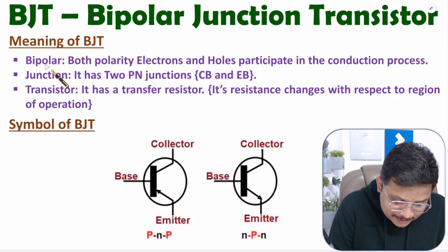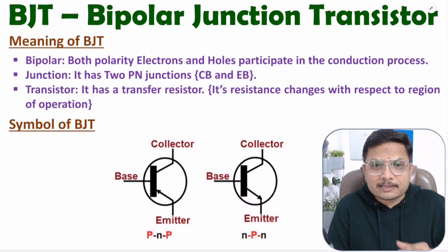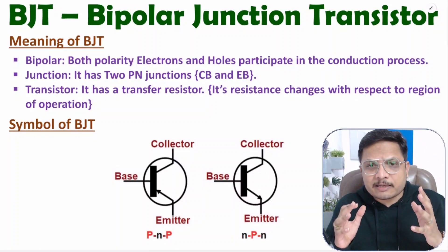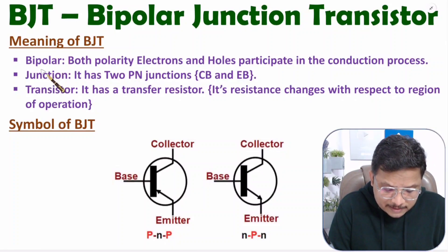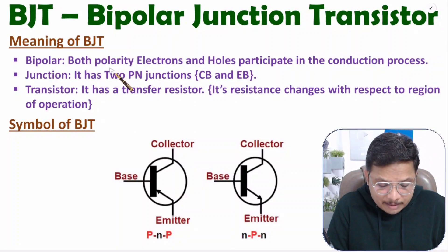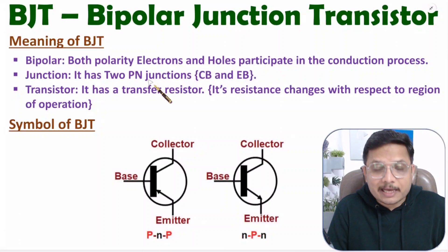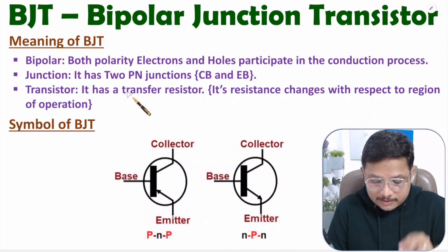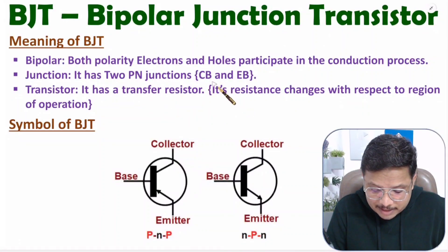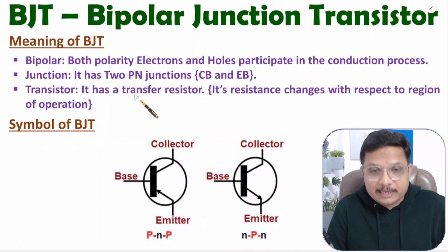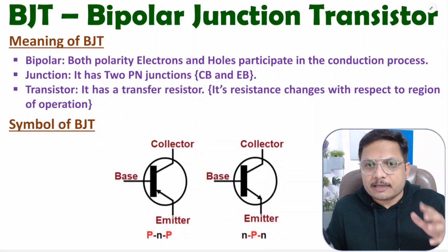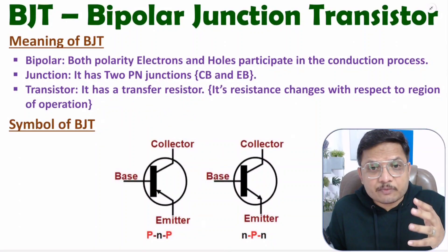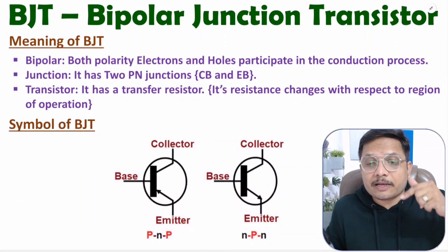Based on its name you can understand so many things about BJT: it is bipolar, meaning conduction happens due to electrons and holes; there are two junctions — emitter-base and collector-base; and it has transfer resistance, meaning resistance of BJT changes with respect to its region of operation.